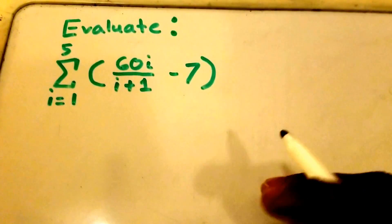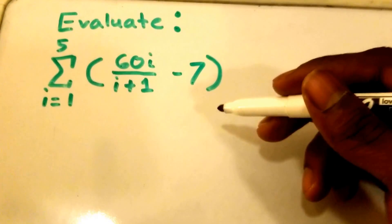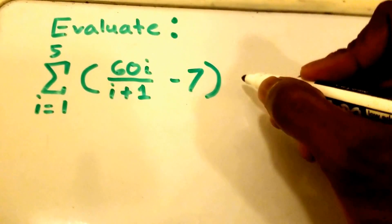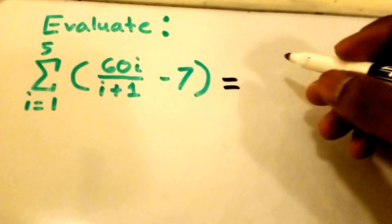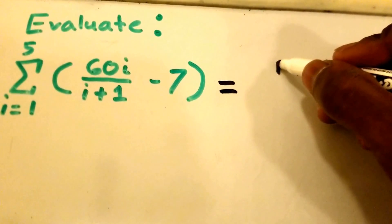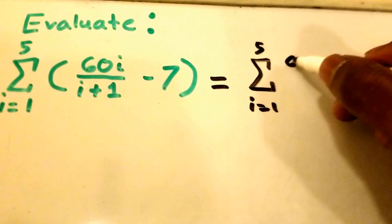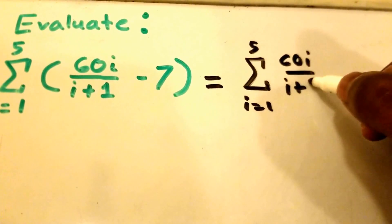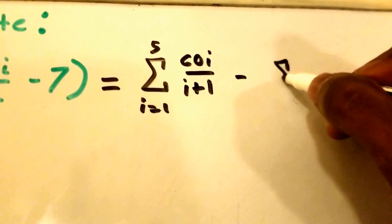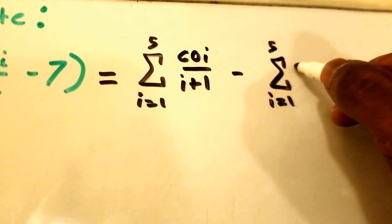At first this may look pretty daunting or complicated. So what we're going to do is break this up into smaller chunks and then solve those smaller chunks to make it easier. We'll use the summation property to break this up, so we get the summation from i equals 1 to 5 of 60i divided by i plus 1, minus the summation from i equals 1 to 5 of 7.